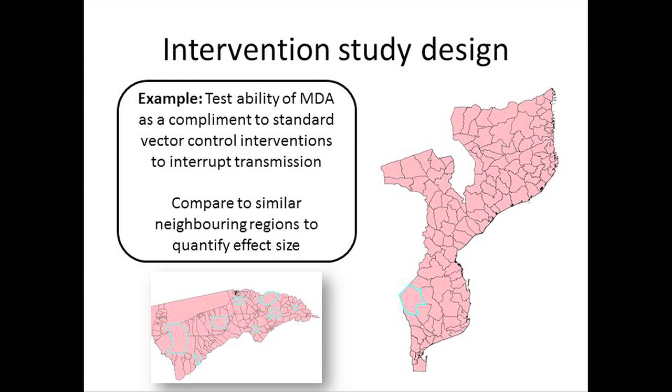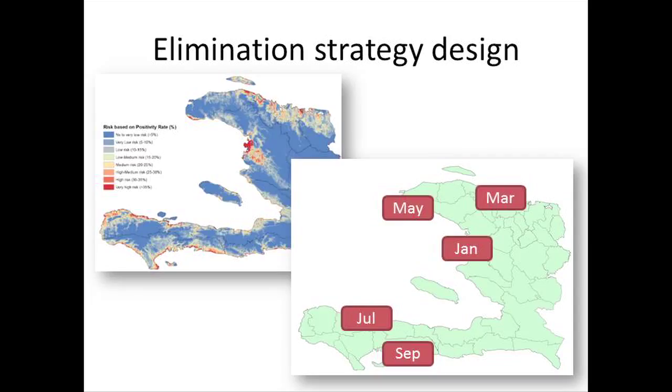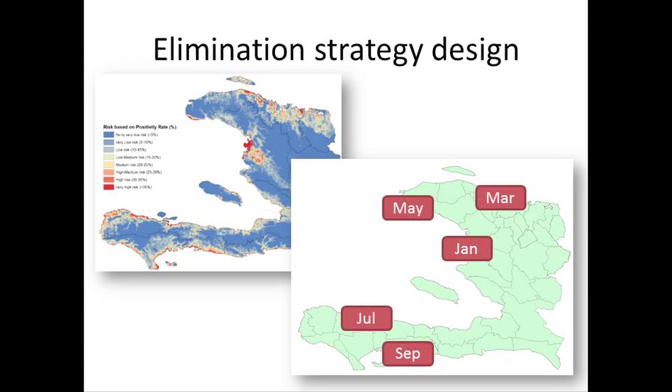For intervention study design, you might want to test the ability of mass drug administration, comparing results to neighboring regions to see the effect size. For elimination strategy design, once we've mapped our focal transmission areas, our strategy might be to target the hotspot first in January, then move on to the next area in March — a simplified but plausible approach.